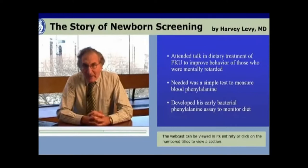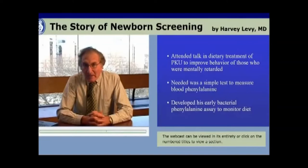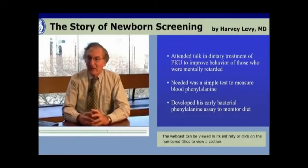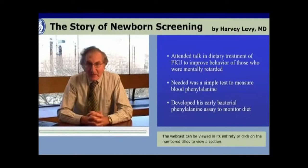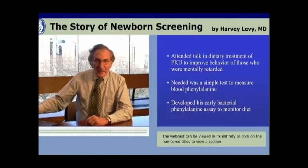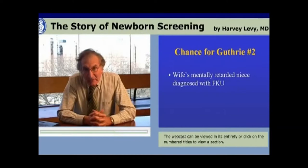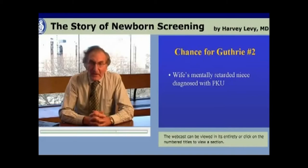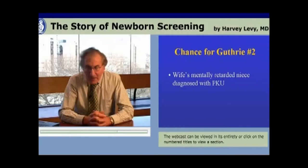Guthrie thought about that, and remembering that in his cancer research he was involved in developing bacterial assays for metabolites, he said that some of his bacterial assays probably could be modified to respond to phenylalanine. So indeed he did this — he modified his cancer bacterial assays to make them applicable to the identification and measurement of phenylalanine in blood, and used that to aid Dr. Warner in monitoring the diet for PKU.